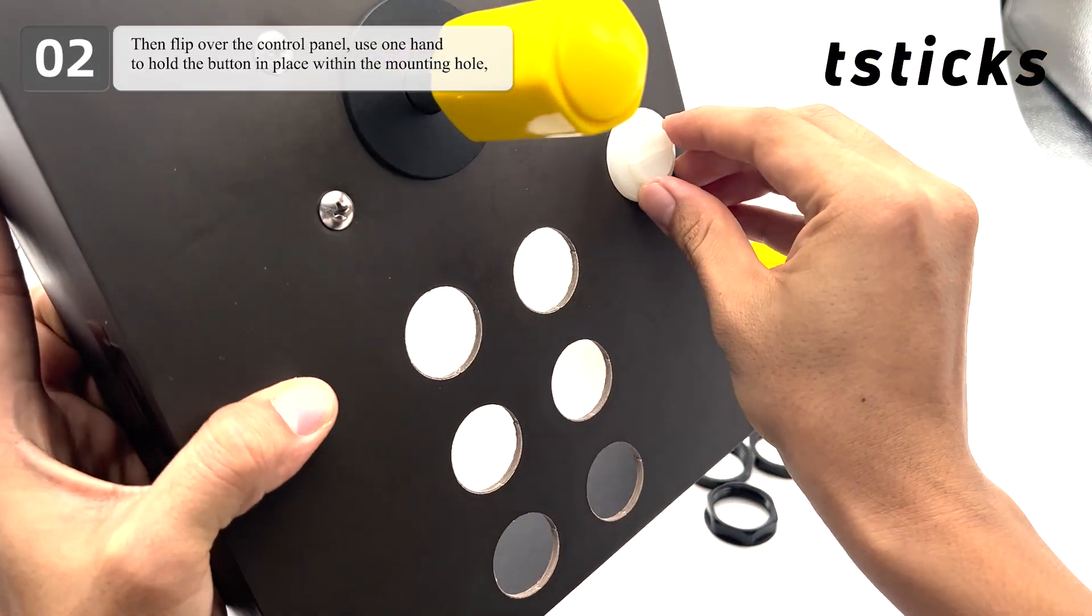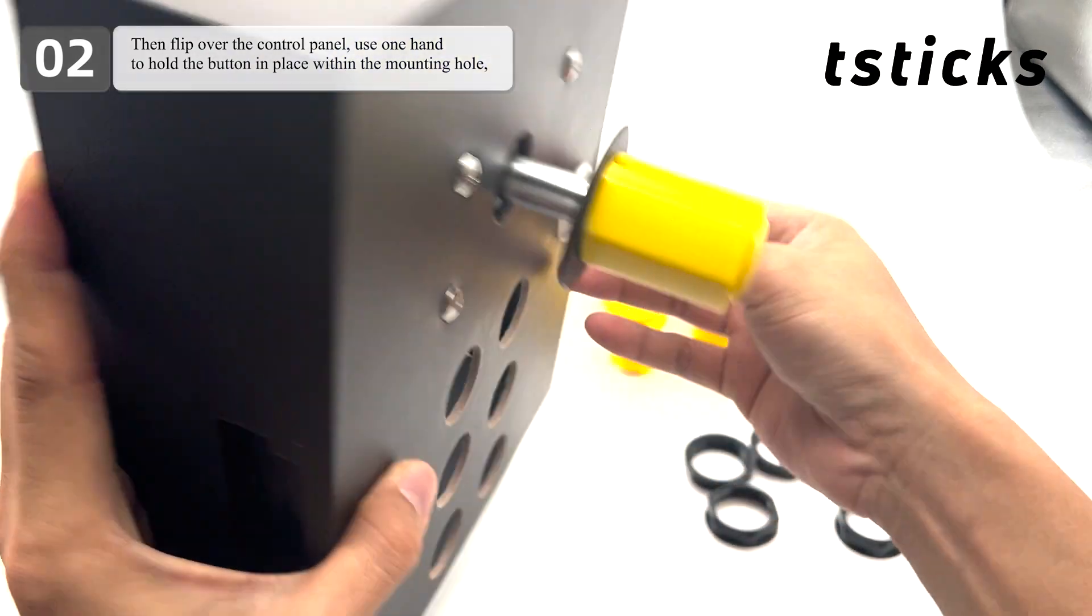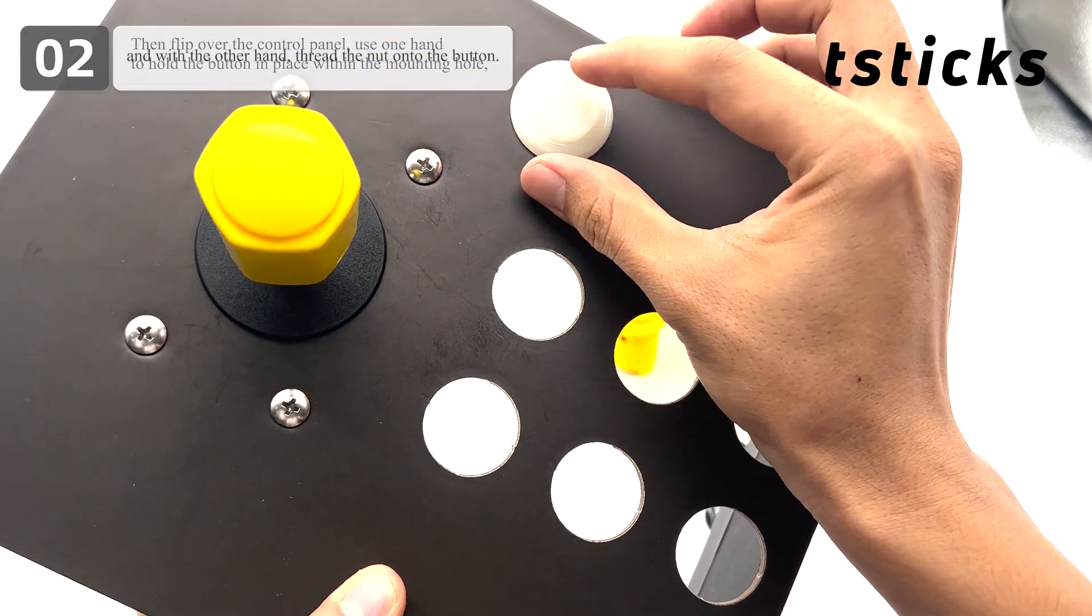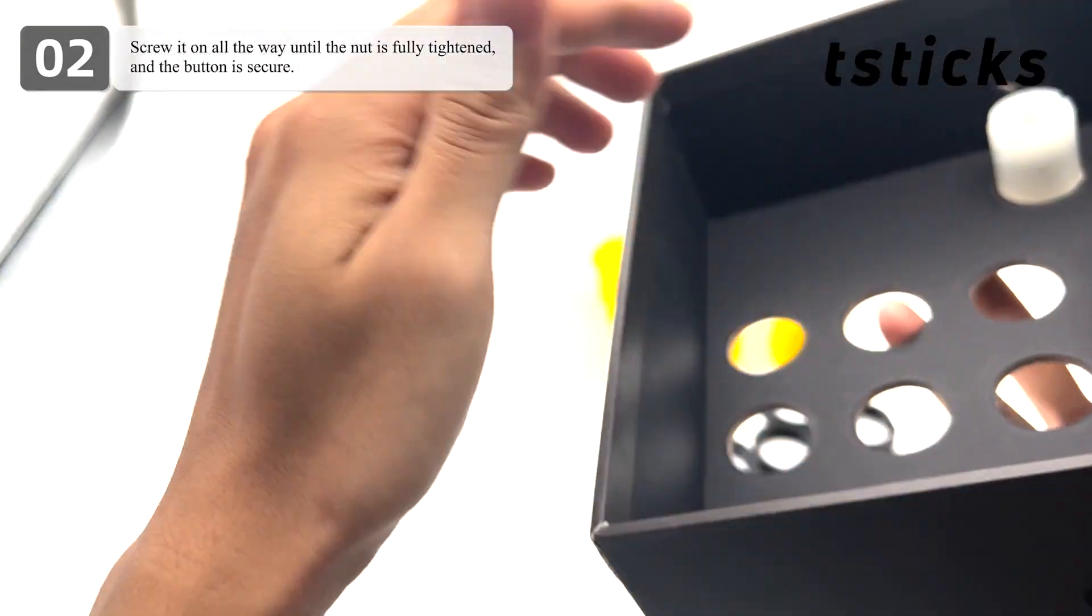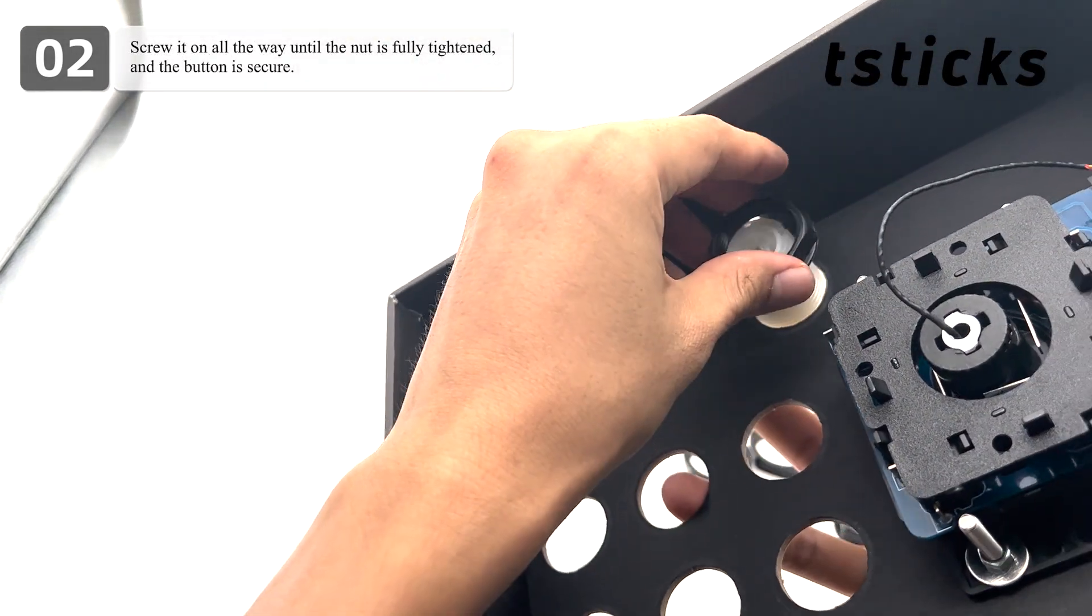Then flip over the control panel, use one hand to hold the button in place within the mounting hole, and with the other hand, thread the nut onto the button. Screw it on all the way until the nut is fully tightened, and the button is secure.